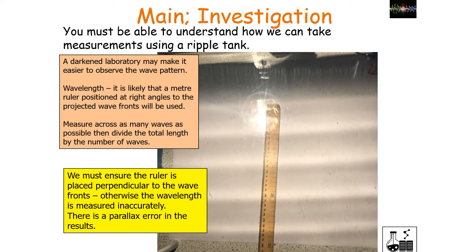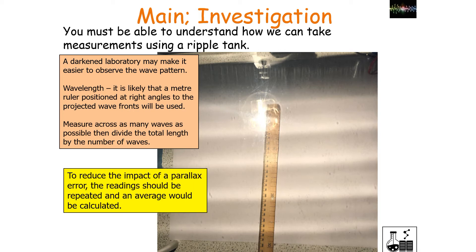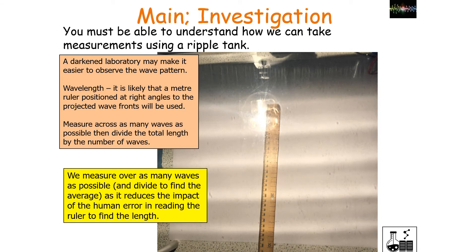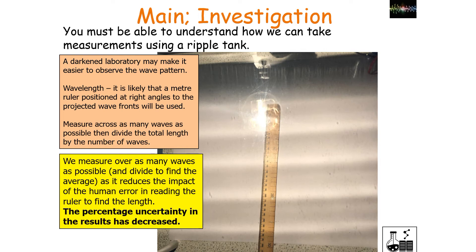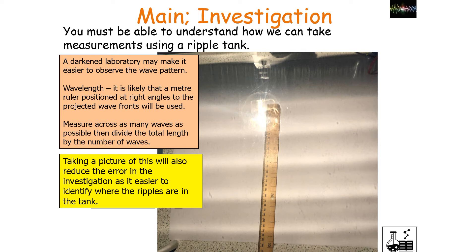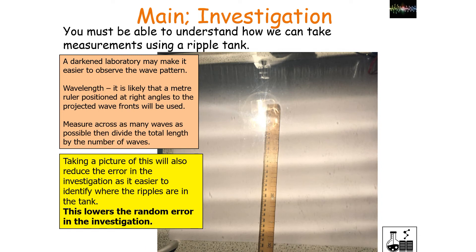Ensure that the ruler is placed perpendicular to the wave fronts, otherwise the wavelength is measured inaccurately and you would get a parallax error in the results. To reduce this parallax error, carry out multiple repeated readings and take an average. Measuring over as many waves as possible and then dividing reduces the impact of human error in reading the ruler, decreasing the percentage uncertainty. Taking a picture of the wave pattern will also reduce error, as it's easier to identify where the ripples are, lowering the random error.